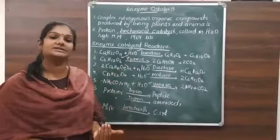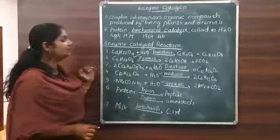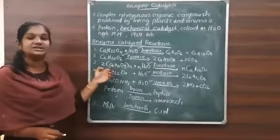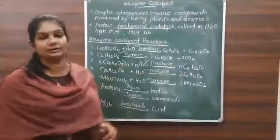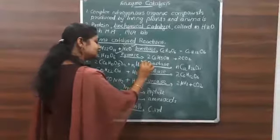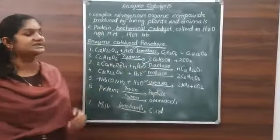Zymase is the enzyme in presence. Third one is starch hydrolysis. Starch hydrolysis, you get maltose. The reaction is carried out in presence of an enzyme, diastase.